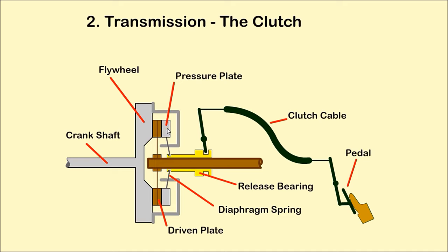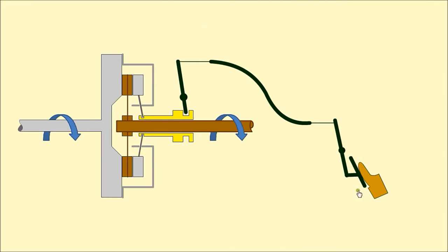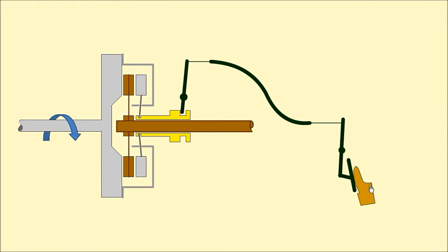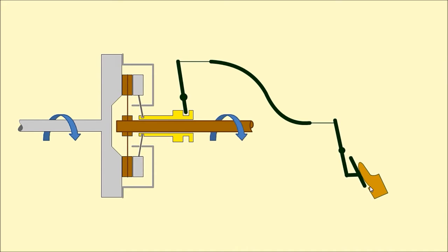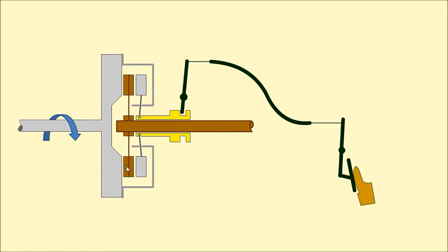When the clutch is pressed, the release bearing moves and the driven plate travels along the spline shaft away from the flywheel, allowing the driven plate to rotate independently of the flywheel. We see when the clutch is pressed, the driven plate can move independently of the flywheel and pressure plate.